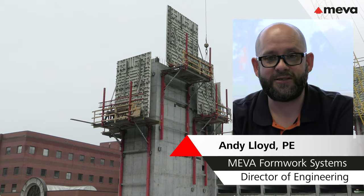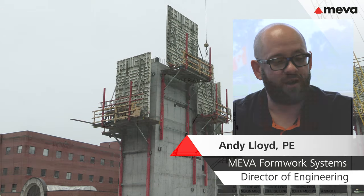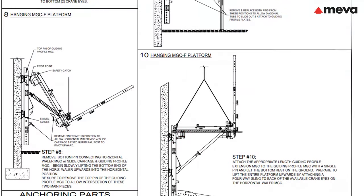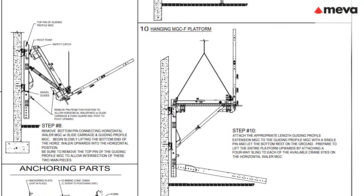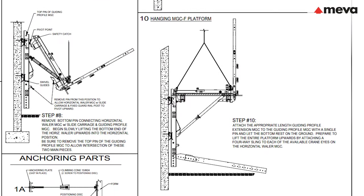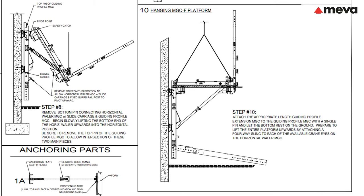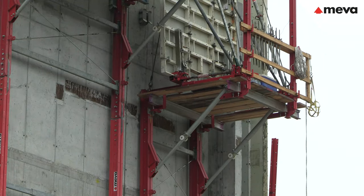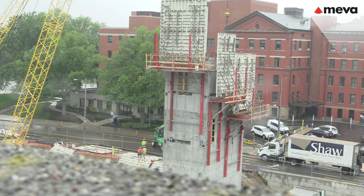All depending on the application, we'll check it out, and then we do our layout drawings and let the customer know how to set those anchors where they need to be — making sure we miss openings and embeds — and then tell them what the concrete strength needs to be in order for them to cycle the formwork upwards up the building.